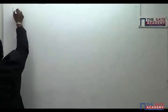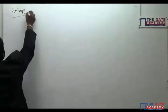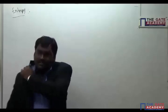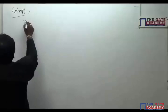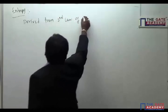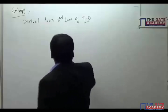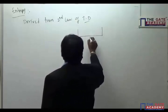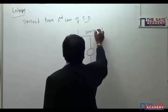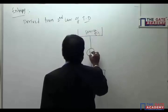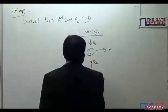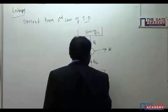We have left out entropy and available energy. Entropy is derived from the second law of thermodynamics. Recall the heat engine problems: there is a source at T1, an engine, and you supply heat Q1, get work done, and reject heat Q2 to a sink at T2.